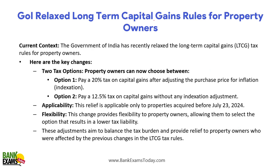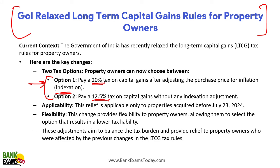The Government of India relaxed long-term capital gain rules for property owners. In the Union Budget 2024, the long-term capital gain on property was fixed at 12.5% without indexation. Now property owners have two options: either pay 12.5% without indexation benefit, or use the indexation benefit and pay tax at 20%.